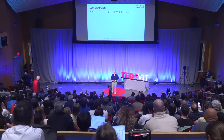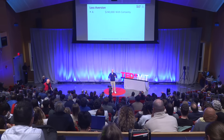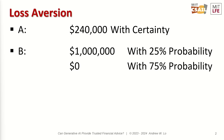I'd like to start by giving all of you an investment decision. I want you to choose between two investments, A versus B. Investment A is an investment where you will earn $240,000 with certainty, free and clear. Investment B is a lottery ticket where you could earn a million dollars with 25% probability, but you'll earn nothing with 75% probability.